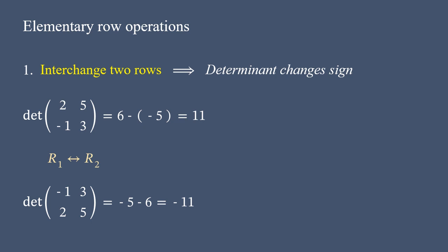As such, we can see that the determinant has changed the sign after the interchange of two rows, and this complies with our first statement.